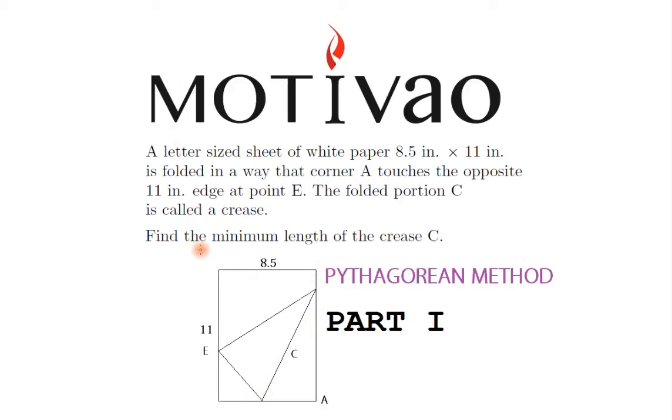Now the exercise wants the minimum length of the crease C. And because of the length of this exercise, I'm going to divide it into two parts. And because of the beauty of this exercise, I'm going to be able to show you different methods to solve this exercise. And in today's method, it's called the Pythagorean method.